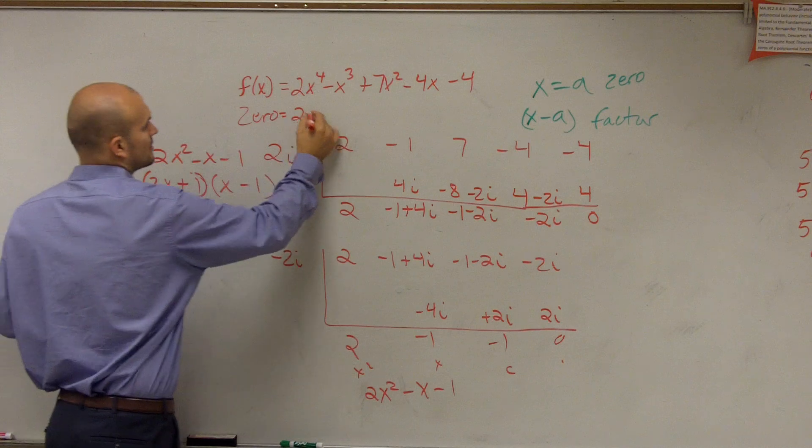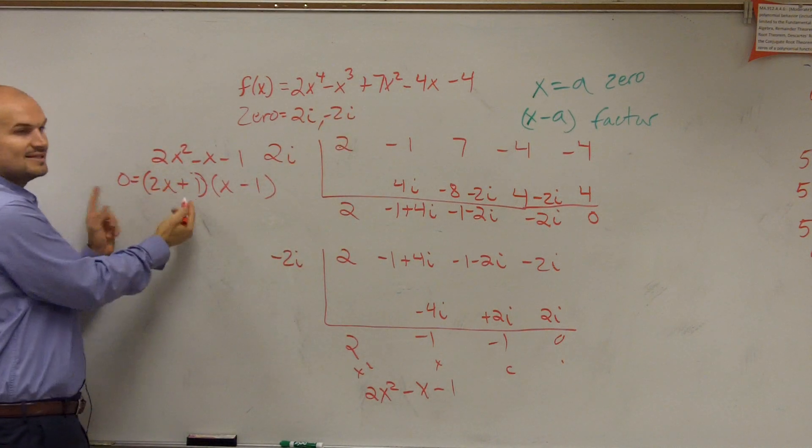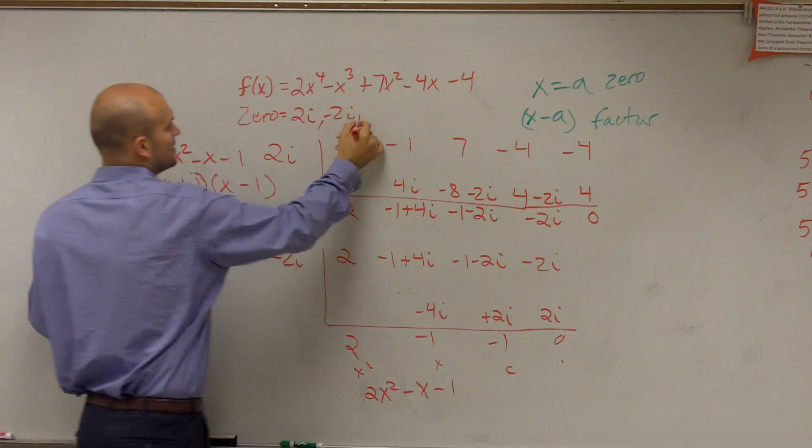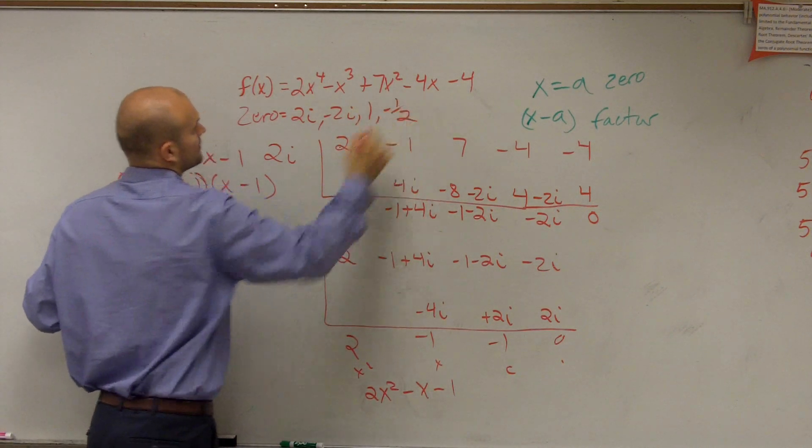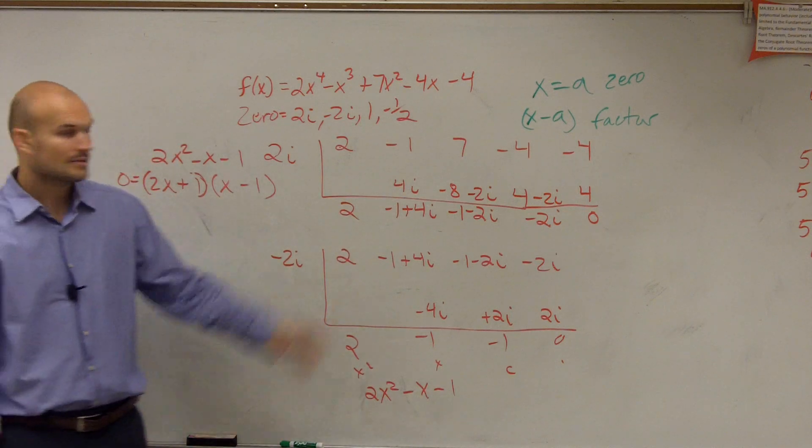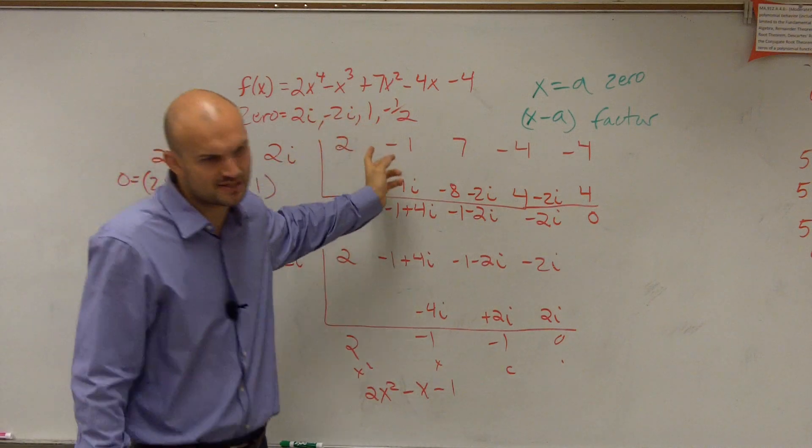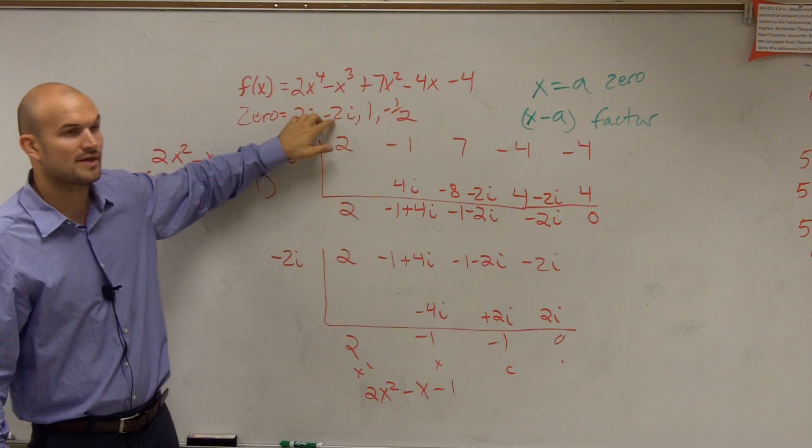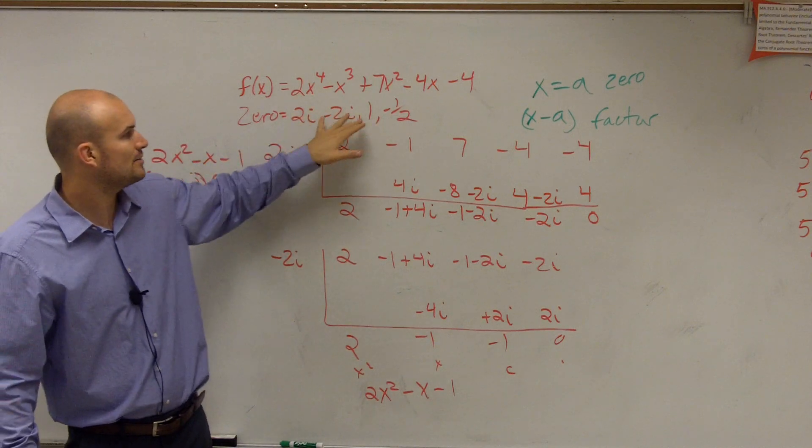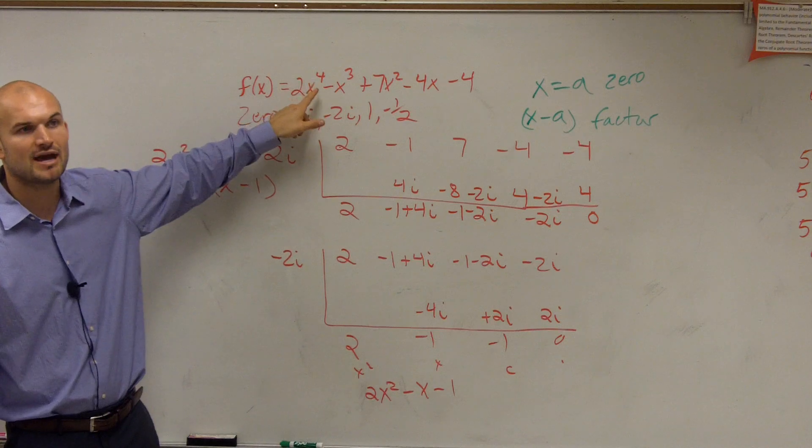So now my zeros are 2i, negative 2i. OK, set these equal to 0, do zero product property. I have 1, and I have a negative 1 half. So I have four zeros. Or I could write this as, it didn't say, just find the zeros, right, not the linear factors. Yeah, find the zeros. I have four zeros. Two of them are complex, or two of them are imaginary, two of them are real, right? How many possible zeros, how many zeros do I have to have? My four, right?